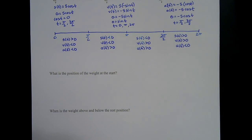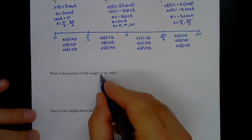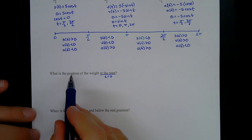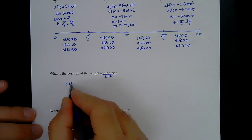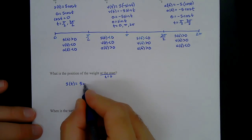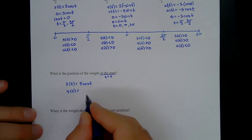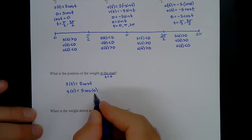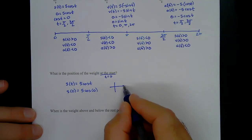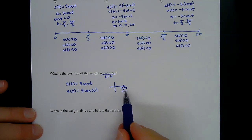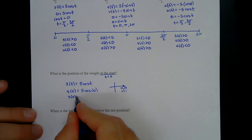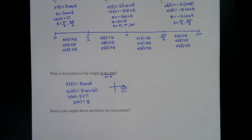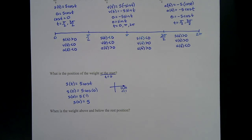First question: what is the position at the start, t = 0? Using s(t) = 5cos(t), we get s(0) = 5cos(0). At angle 0, cosine equals 1, so s(0) = 5 × 1 = 5. That means the weight started at positive 5 — five units below the rest position, because positive is going down.